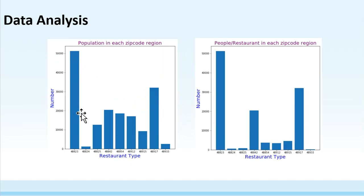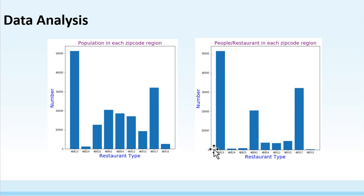This graph shows the population in each region — we can see that the 48823 region has the most population. This figure shows the expected guests for each restaurant in each region; it is the number of population divided by the number of restaurants. So the 48823 region also has the most expected guests. Beyond this basic analysis of restaurants, people's food preferences in each region should also be considered.